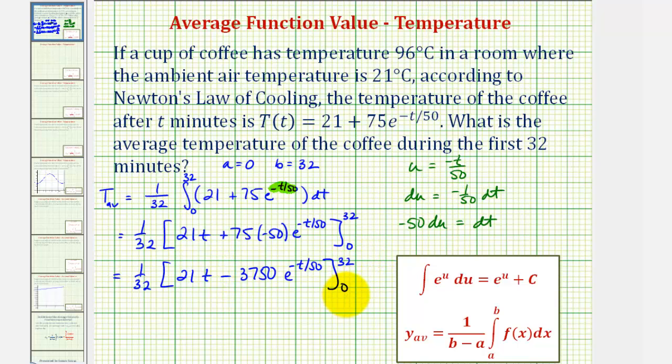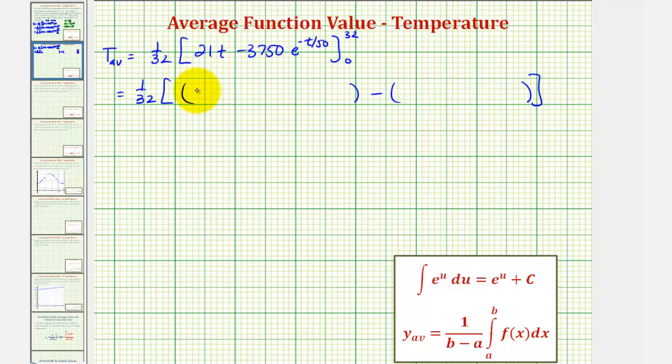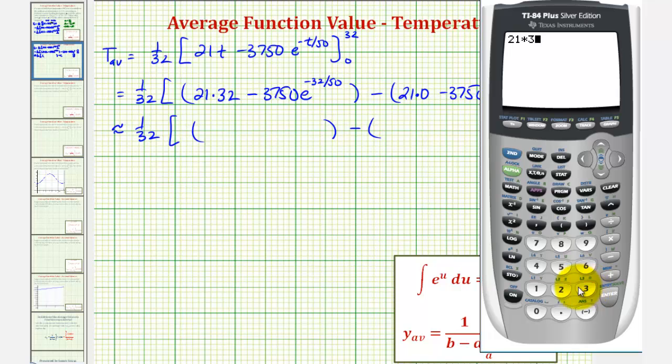And now we'll evaluate this at 32 and then zero and then find the difference. Let's go ahead and do this on the next slide. So when t is 32, we would have 21 times 32 minus 3,750 times e raised to the power of negative 32 divided by 50. And then when t is zero, we have 21 times zero and then minus 3,750 times e raised to the power of negative 32 divided by 50.